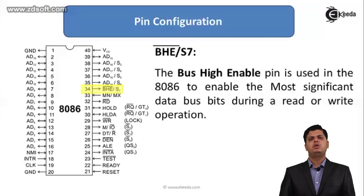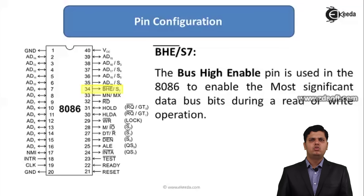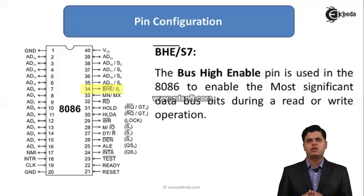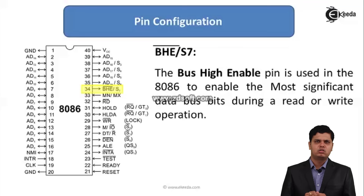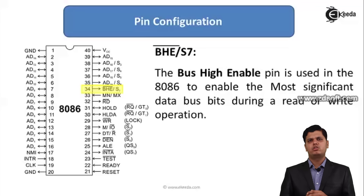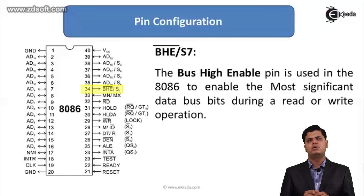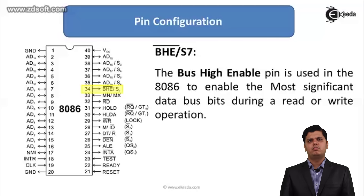The next pin is BHE bar (Bus High Enable) / S7. BHE is used to enable the most significant data bus bits during read and write operations. Whenever 16-bit data needs to be accessed from an 8-bit memory location, memory banking is used. This bus high enable signal — an output signal — is connected externally to memory to access the higher 8 bits of data.